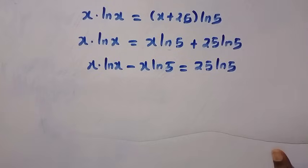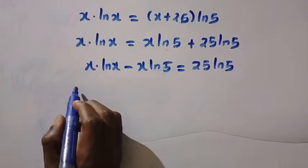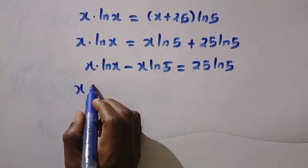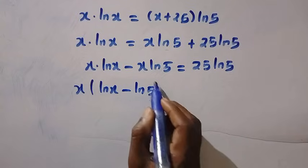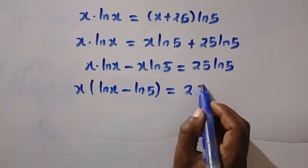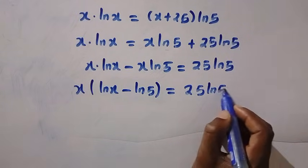And in the next step we are going to take out x. By taking out x we are going to have x times ln x minus ln 5 equals 25 ln 5.